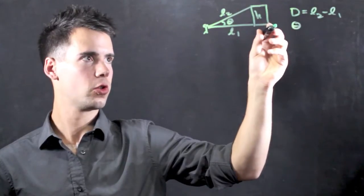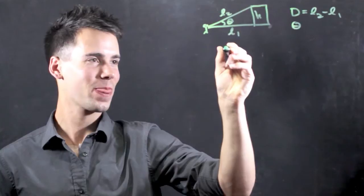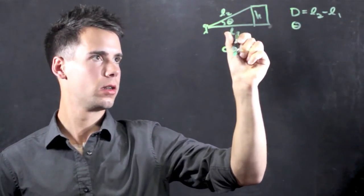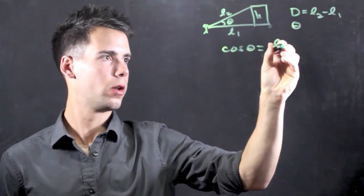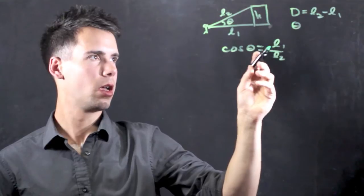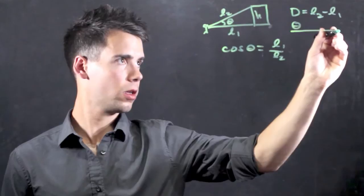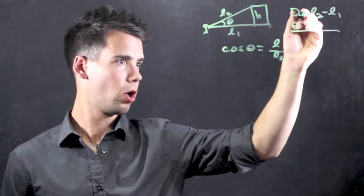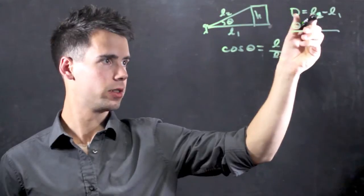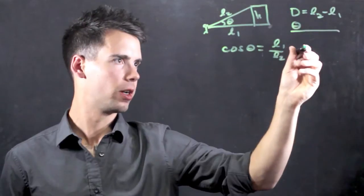So since we do know theta, we can use trigonometry to find h. We can start with cosine of theta, and we find the cosine of theta is equal to adjacent divided by hypotenuse, which is L1 over L2. We can use this equation. So solving for L2 we would get d plus L1, but unfortunately that would be in the denominator. So let's solve for the numerator and we find L1 is equal to L2 minus d.